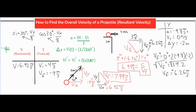Basically, anytime you're finding a final resultant velocity, you're finding the hypotenuse of a triangle. You use the horizontal component, which stays constant, and you find the final vertical velocity in your y column using one of the acceleration formulas. Then use the Pythagorean theorem to find the hypotenuse — that gives you the overall velocity of your projectile. I hope that was helpful. Thank you for watching.